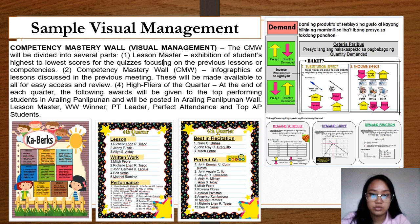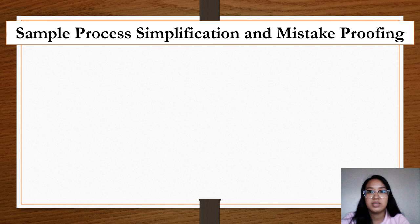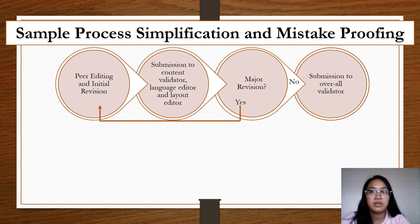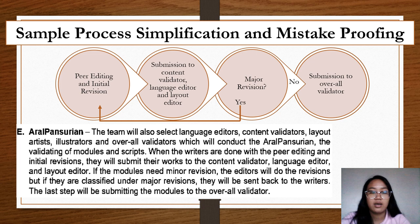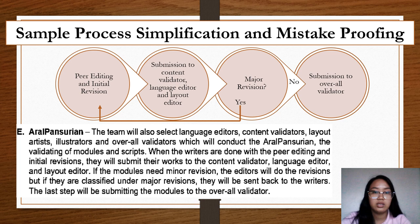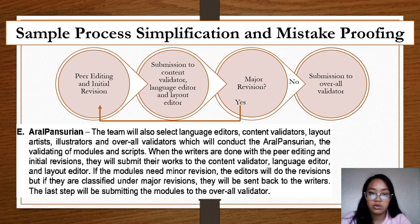A sample of process simplification and mistake proofing: the mistake proofing tool for Project Aral Pandemi, called Aral Pan Surian, works as follows — after writing the SLMs, the output is subjected to peer editing and initial revision. Right after that, it is submitted to a content validator, language editor, and layout editor. If it needs major revision at the third step, it is sent back to the writer. However, if it only needs minor revision, it is submitted directly to the overall validator. That is how we explain each intervention.